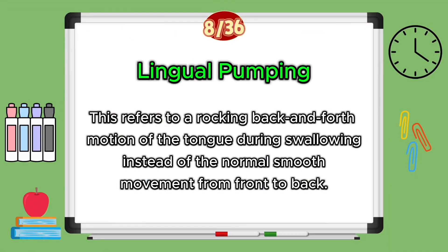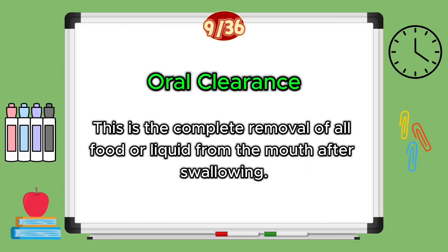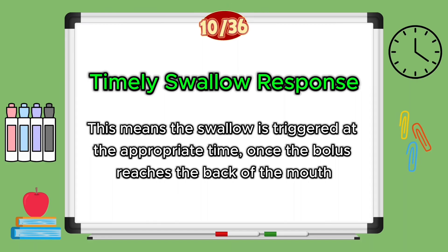Lingual pumping refers to the rocking back and forth motion of the tongue during your swallow. Instead of the normal smooth movement from front to back, the tongue rocks back and forth — this is typically seen in a person who has Parkinson's disease. Oral clearance is the complete removal of all food and liquid from the mouth after swallowing. A timely swallow response means the swallow is triggered at the appropriate time once the bolus reaches the back of the mouth, whereas a delayed swallow response means the bolus sits too long before the swallow starts.